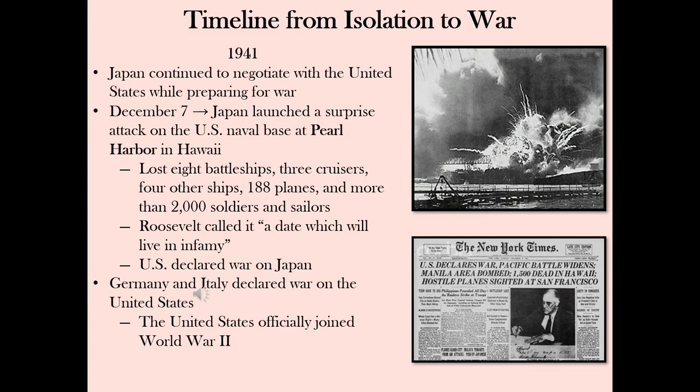The United States Congress voted 388 to 1 to declare war on Japan. Representative Jeanette Rankin of Montana — the first woman to hold federal office in the United States, elected to Congress in 1916 — cast the lone dissenting vote. Hitler declared war five days later, which was an interesting and probably mistaken decision. It is not clear if Roosevelt would have been able to convince Congress to declare war on Germany as well as Japan, but Hitler made this easy for FDR.